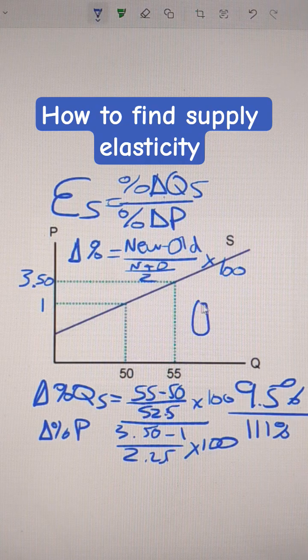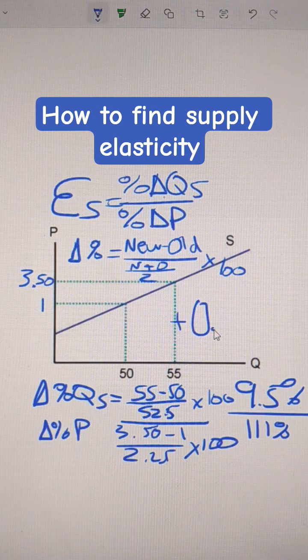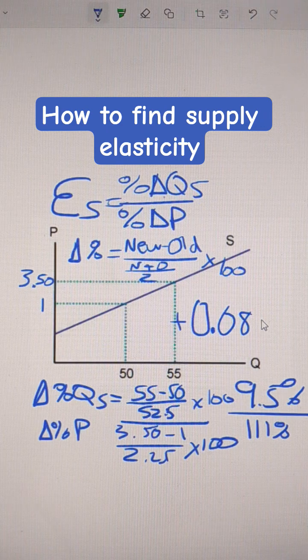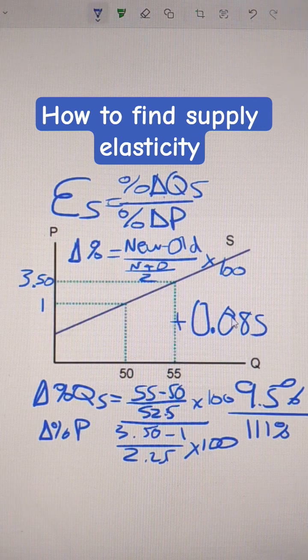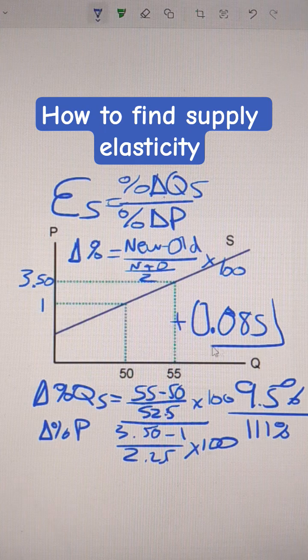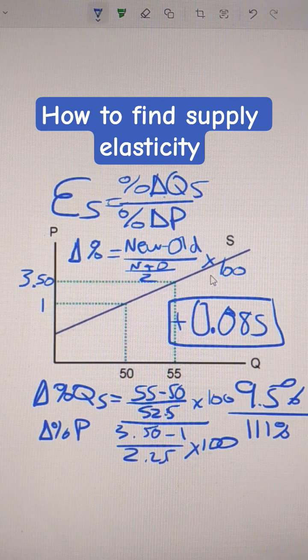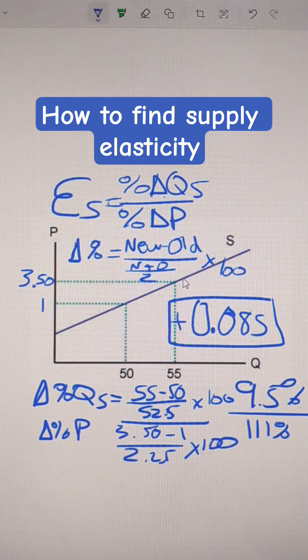Turns out a number that's positive. This is a ratio, and this is the supply elasticity, 0.085. And since that number is less than 1, even though this looks pretty flat, this is inelastic. And that's how to find elasticity of supply.